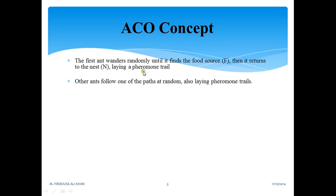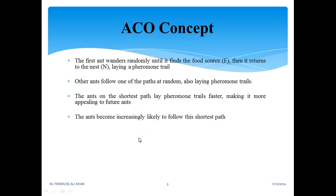Other ants follow one of the paths at random, also laying pheromone trails. Even other ants lay this pheromone trap. The ants on the shortest path lay pheromone trails faster, making it more appealing to future ants. Ants become increasingly likely to follow this shortest path.